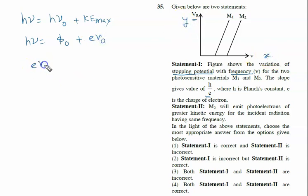We know E V naught is given by H nu minus phi naught, and V naught is given by H by E times nu minus phi naught by E. So we can write it like Y equals MX plus C, and the graph shows the slope.